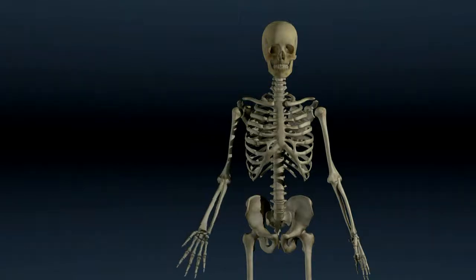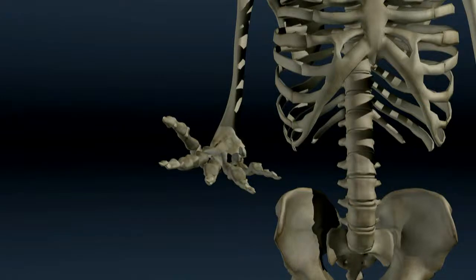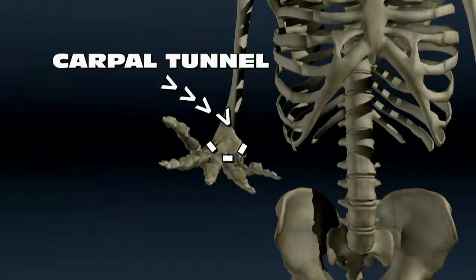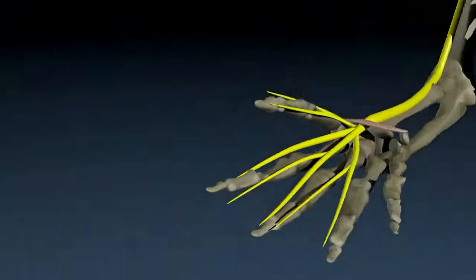The carpals are small bones in the wrist. They form a tunnel. A nerve known as the median nerve travels through this carpal tunnel on its way to the hand. The tunnel is covered by a structure known as the transverse carpal ligament.